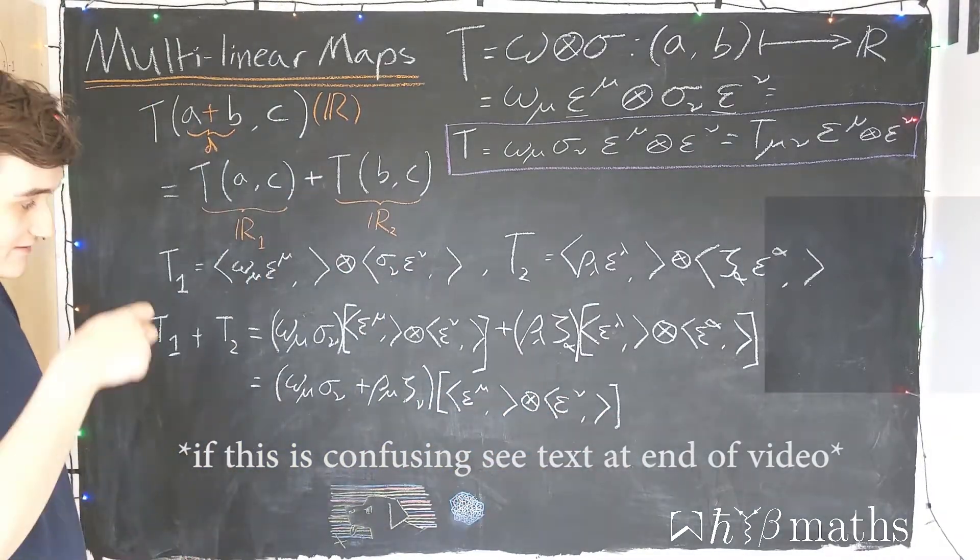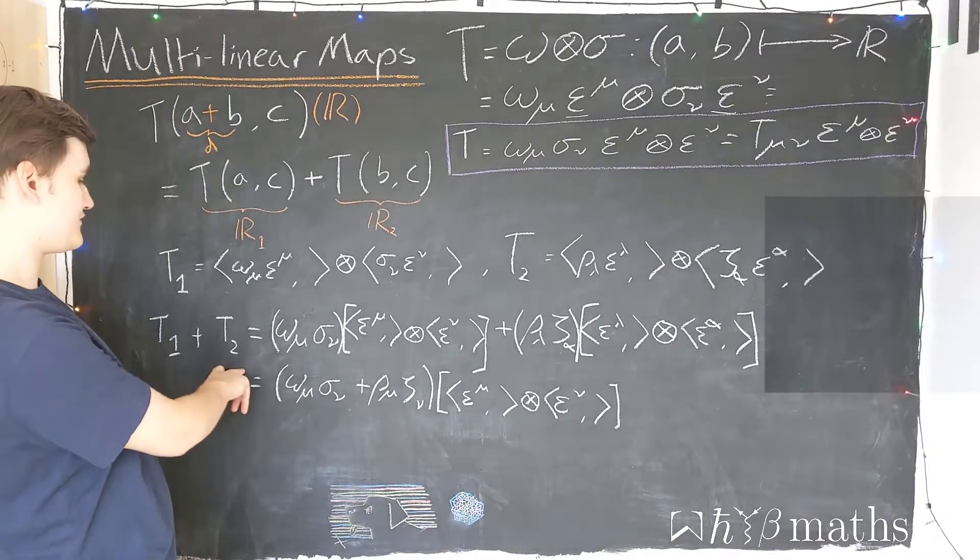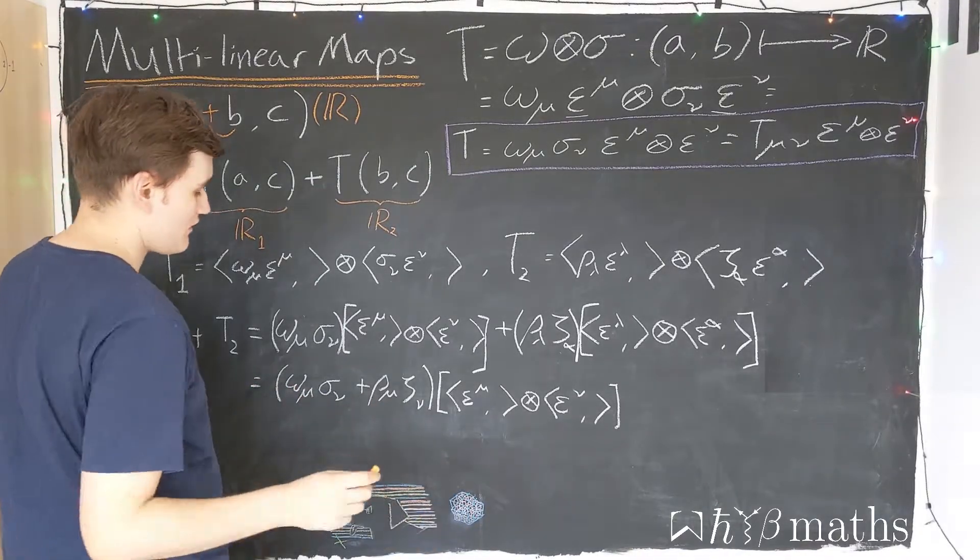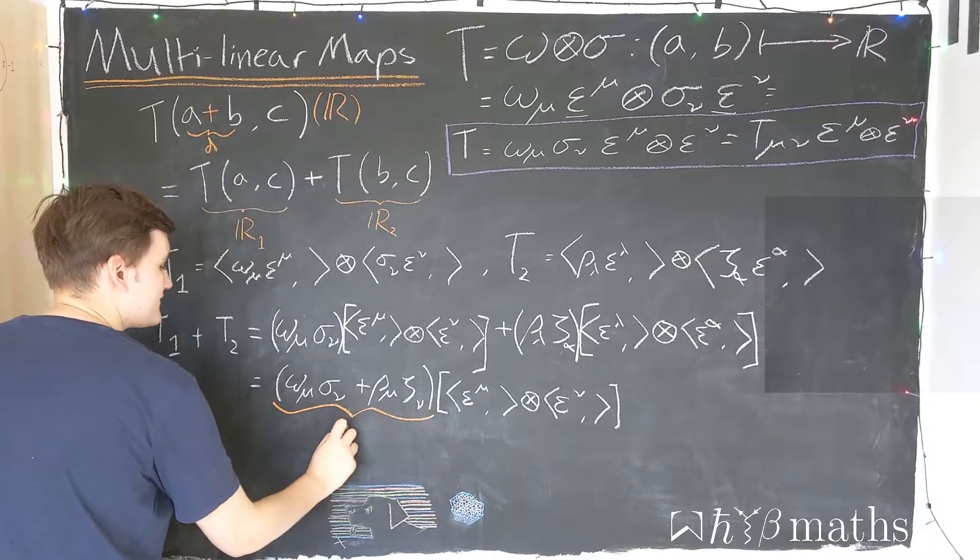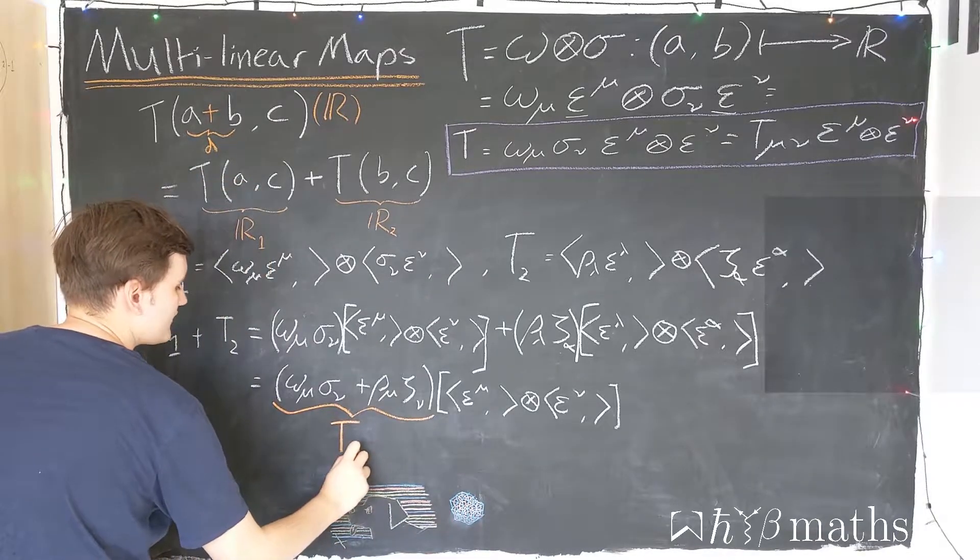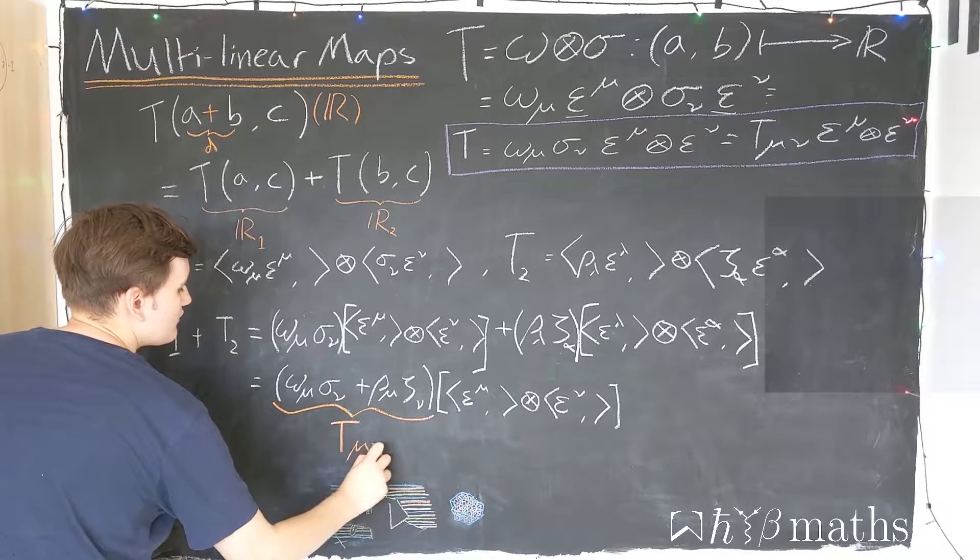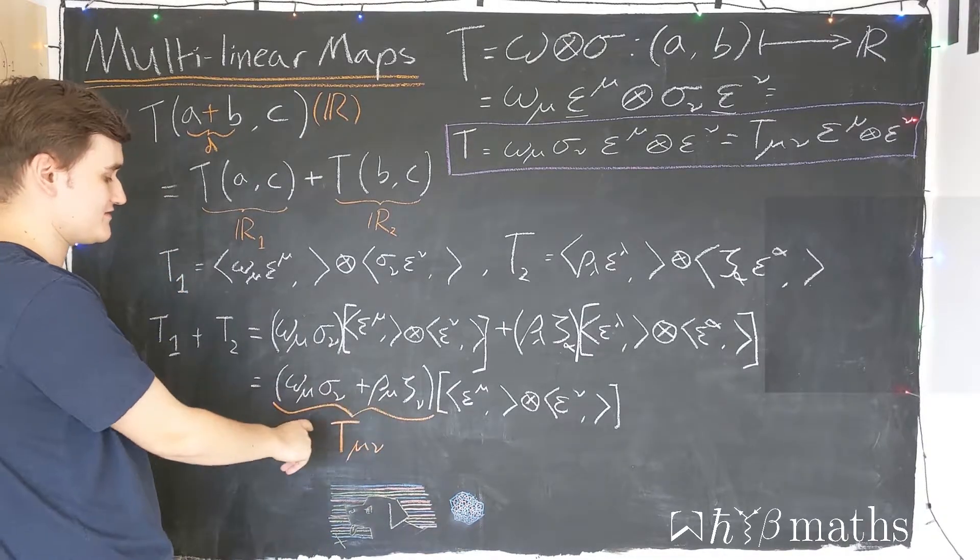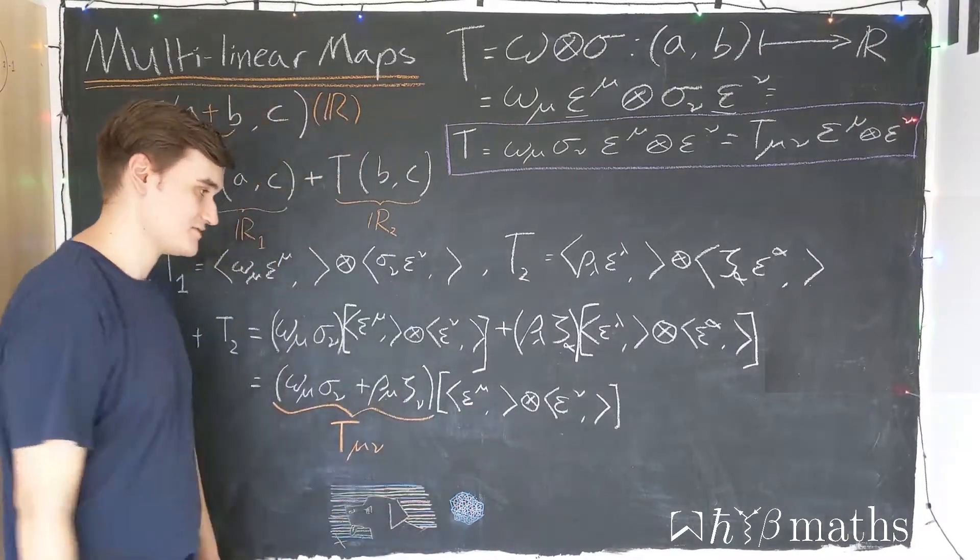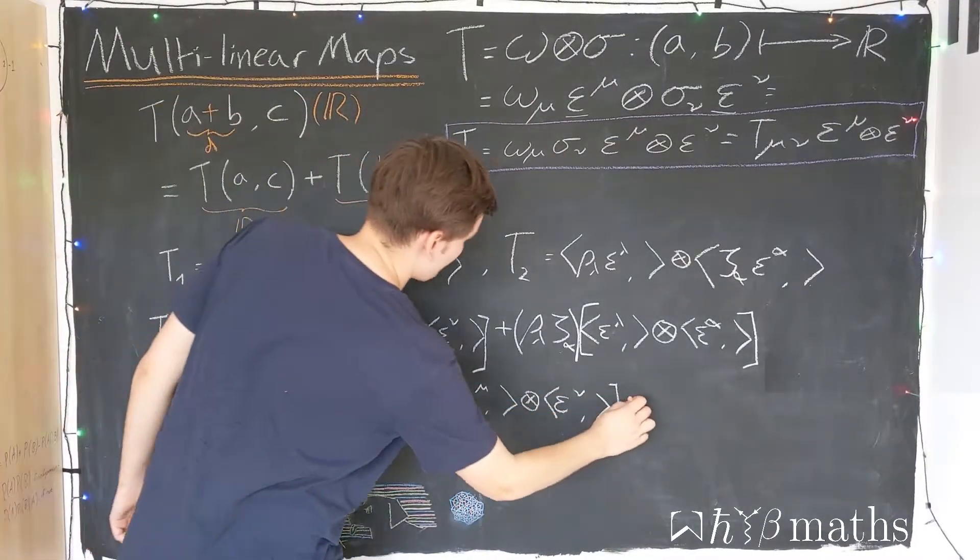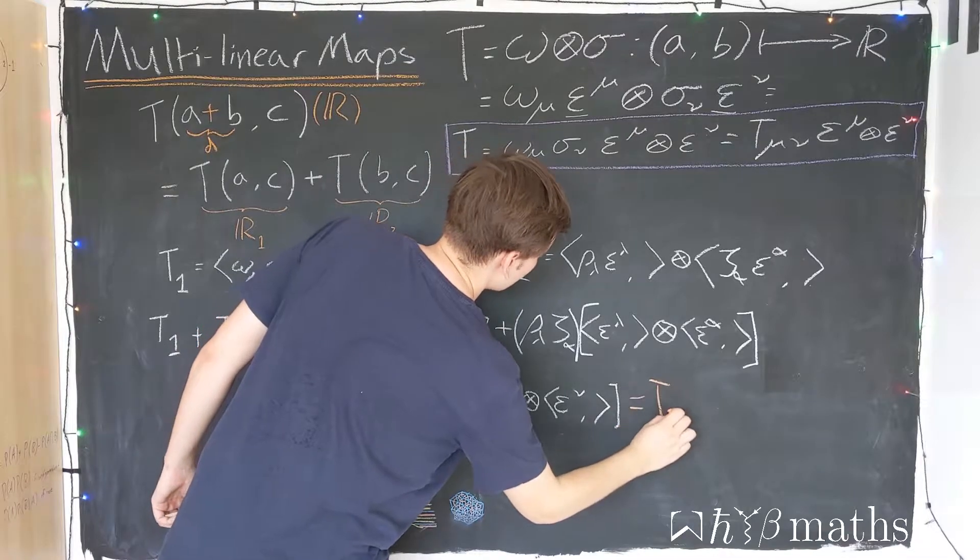So now we see what we've done. We've effectively turned the sum of two tensors into a third single tensor, because I can just relabel these now as being the components of this new tensor, since we just have two indices here, and then we have our basis maps. So this is just some third tensor T3.